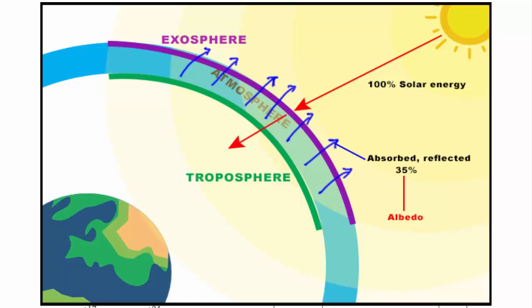In other words, albedo means how much of the sun's energy is reflected back into space. Now as the remaining 65% sun rays enters the atmosphere, 14% of it is absorbed within the atmosphere by water vapor, dust particles and other atmospheric gases. Now the remaining 51% of sun rays is actually absorbed by the Earth's surface.